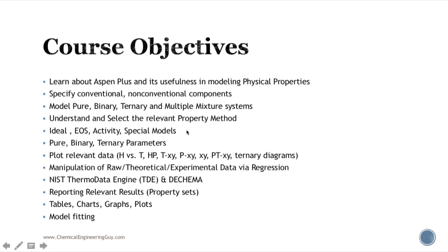The next objective is to understand and select the most relevant property method — this is very important. The main point of this course is to understand what a property method is and why it matters to select the best one for a satisfactory simulation. We will cover ideal models, equations of state, activity models, and special models, and why we need to pay special attention to each.